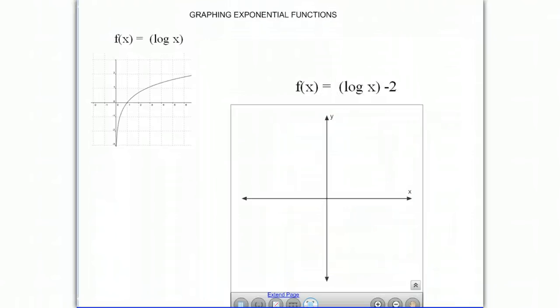In our next example, we are going to, in this case, you notice you have the log of x minus 2, which moves the graph down 2 units. So we do know that our original x-intercept is at 1, and we don't really know where our new x-intercept will be, but we do know that when we move the graph down...